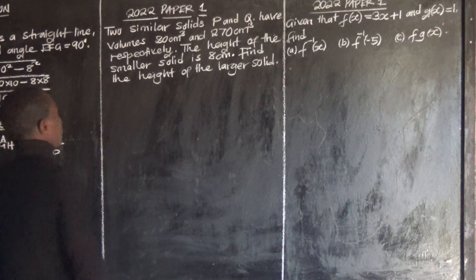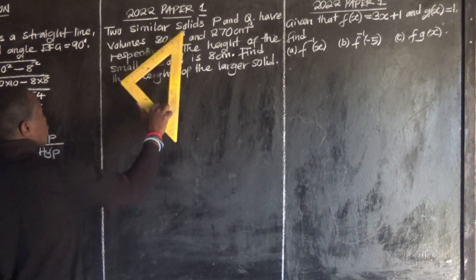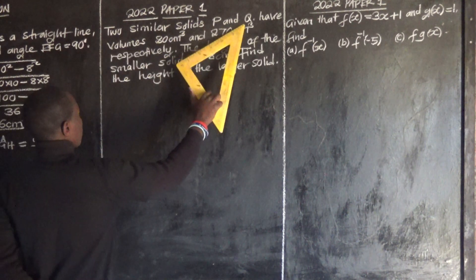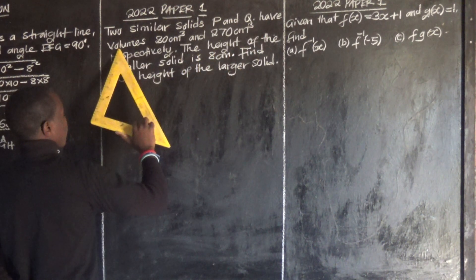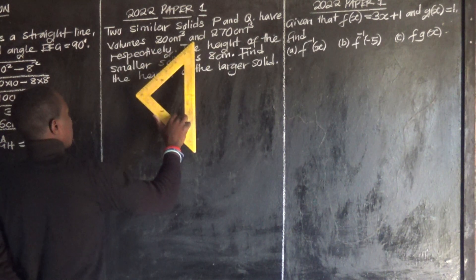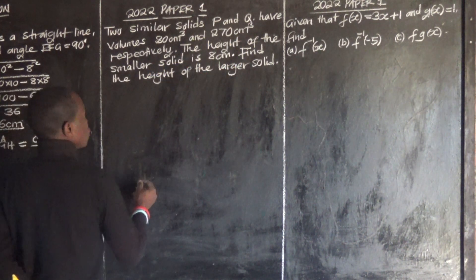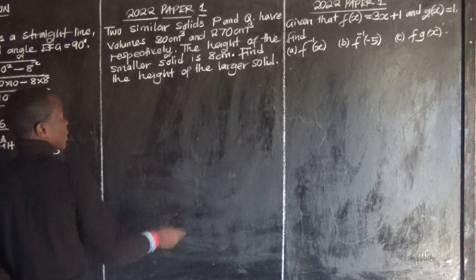2022 paper 1 says two similar solids P and Q have volumes 80 cubic centimeters and 270 cubic centimeters respectively. So we are talking about two similar solids.